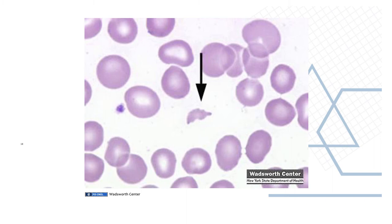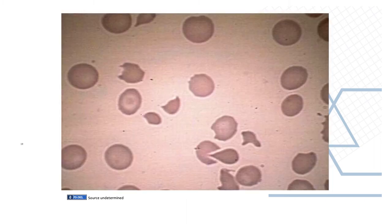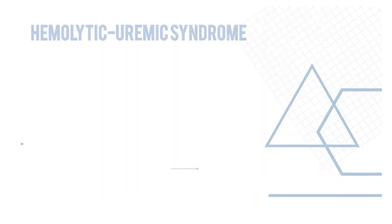Here is a peripheral smear of intravascular hemolysis showing schistocytes, as indicated by the arrow. A similar picture is shown in another patient. This concludes our discussion of TTP.